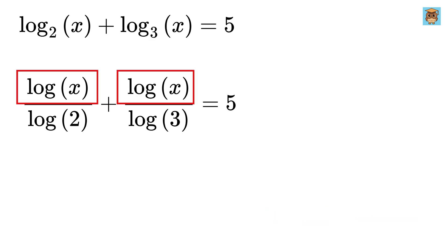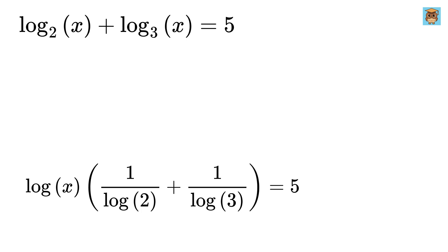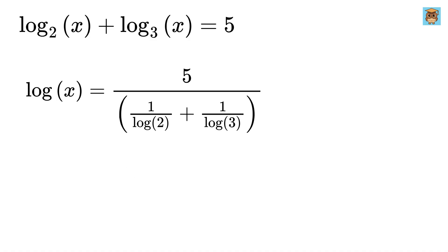Since both terms contain the log of x, we factor it out, giving log of x times 1 over log of 2 plus 1 over log of 3 equals 5. Now, solving for the log of x, we get log of x equals 5 over 1 over log of 2 plus 1 over log of 3.